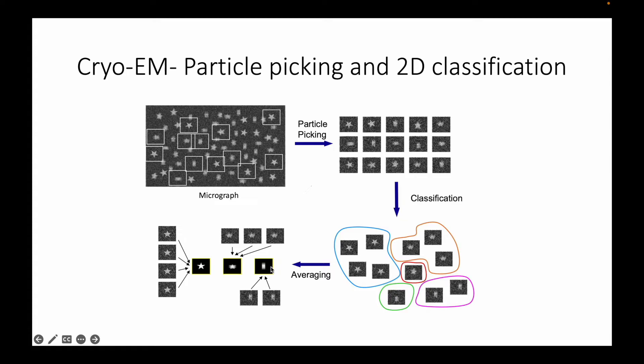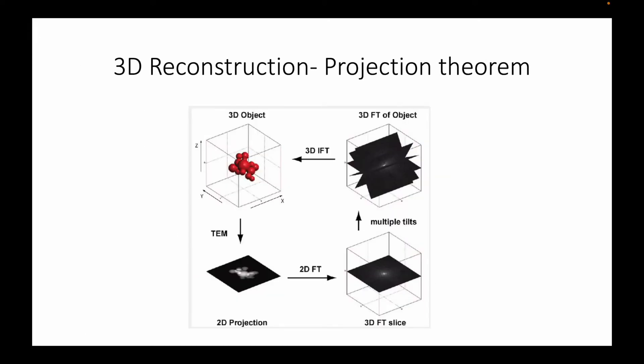We can take all of these 2D classes and we can use it for 3D reconstruction. This is done by making use of the projection theorem. How 3D reconstructions work is simply we have a 3D object, in our case it's a protein. Let's say we have a protein inside a box. We can use TEM or transmission electron microscope to get a 2D image of a protein which is in a box. Here you see a top view, a square, and this is called a 2D projection or a 2D image. We can capture images in different orientations and we can capture multiple images like this.